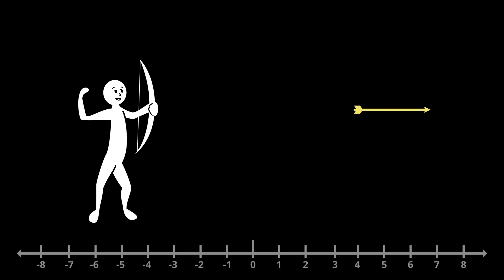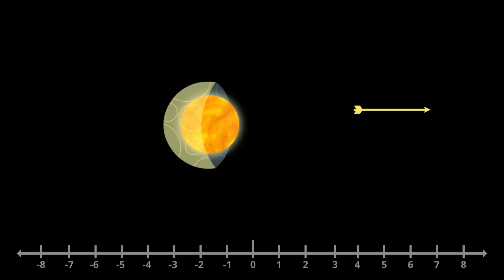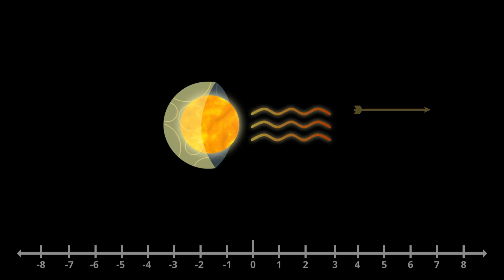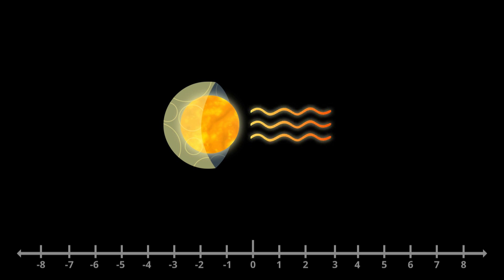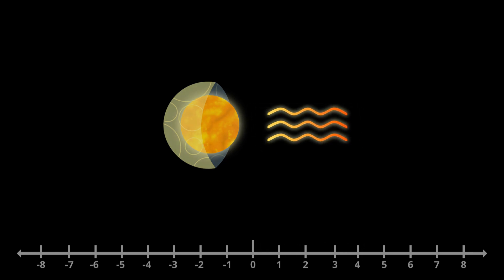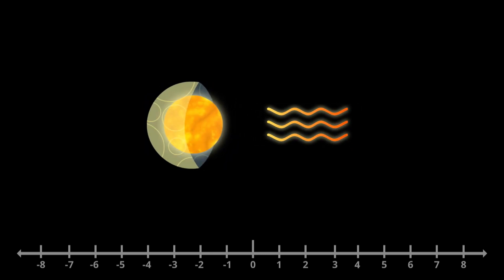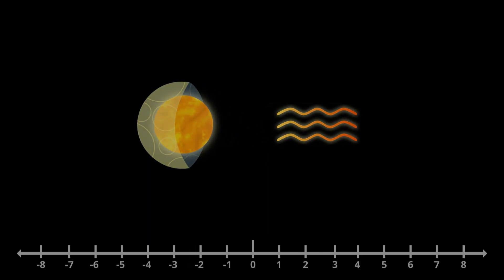Most people would consider that pretty basic physics. The Shkadov thruster works the same way. Replace the archer and the bow with a star and giant mirror, and replace the arrow with light, which has no mass but still has momentum. Essentially, the star-mirror-light system would have to obey the same laws of physics as the archer-bow-arrow system. The star-mirror system fires off light in one direction away from the mirror statite — say, the positive x direction — and the star and mirror must move away in the opposite direction, say the minus x direction, in order for the total momentum to be conserved.